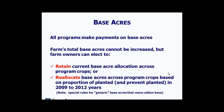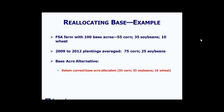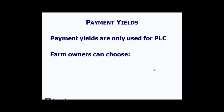Here's a simple example. Say your FSA farm has 100 base acres — current allocation is 55 corn, 35 soybeans, and 10 wheat. From 2009 to 2012 your plantings averaged 75 acres of corn and 25 acres of soybeans. The base acre alternatives would be to retain the current allocation of 55, 35, and 10, or to reallocate to 75 corn and 25 soybeans based on more recent plantings — still within the 100 base acres for the farm.